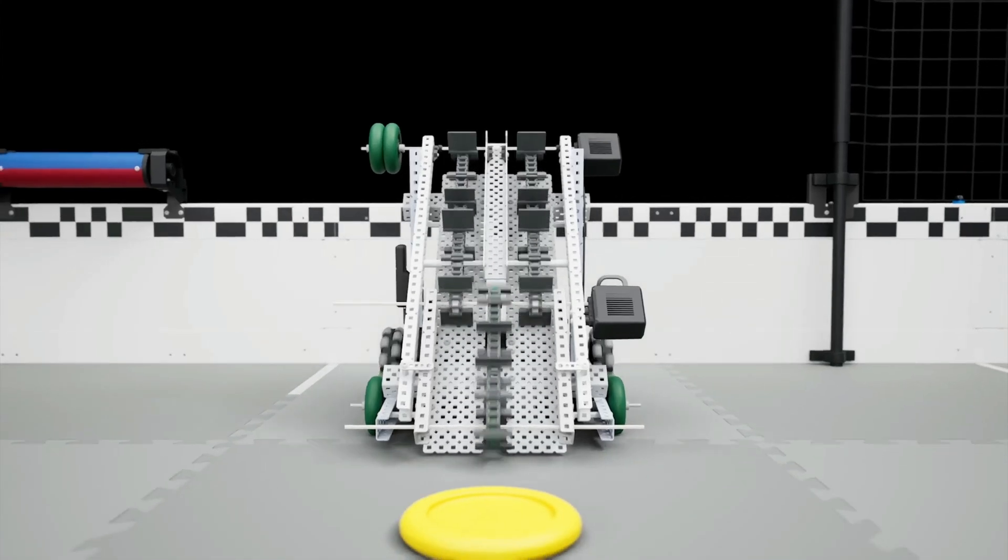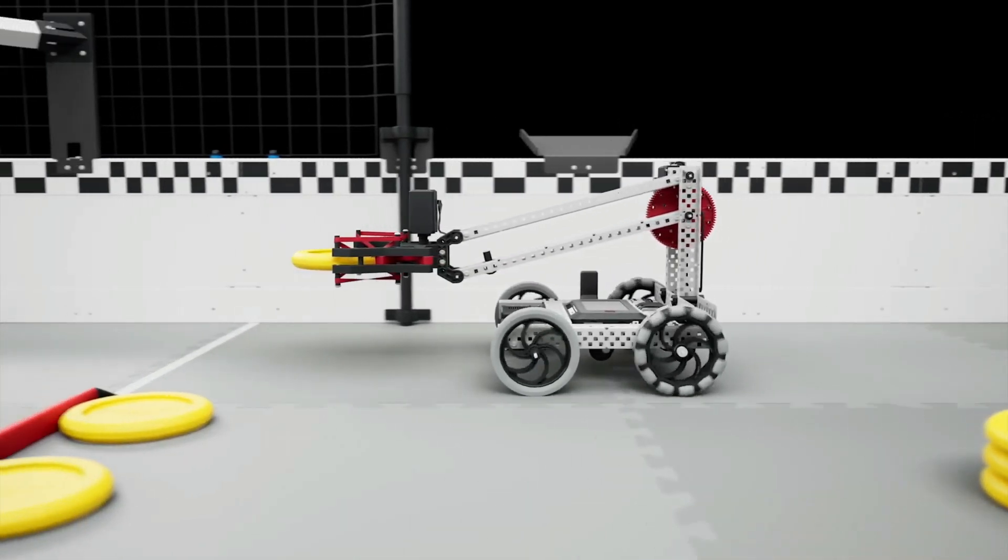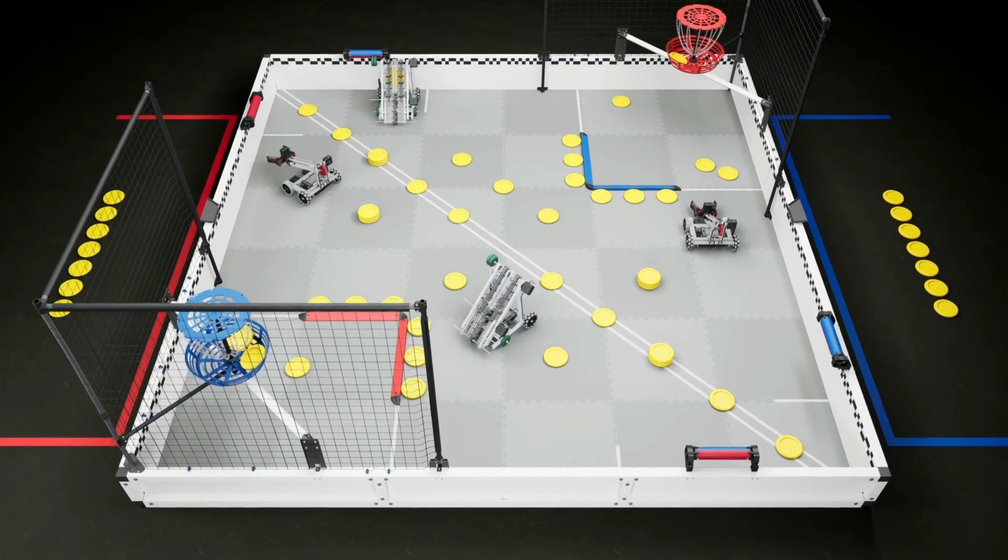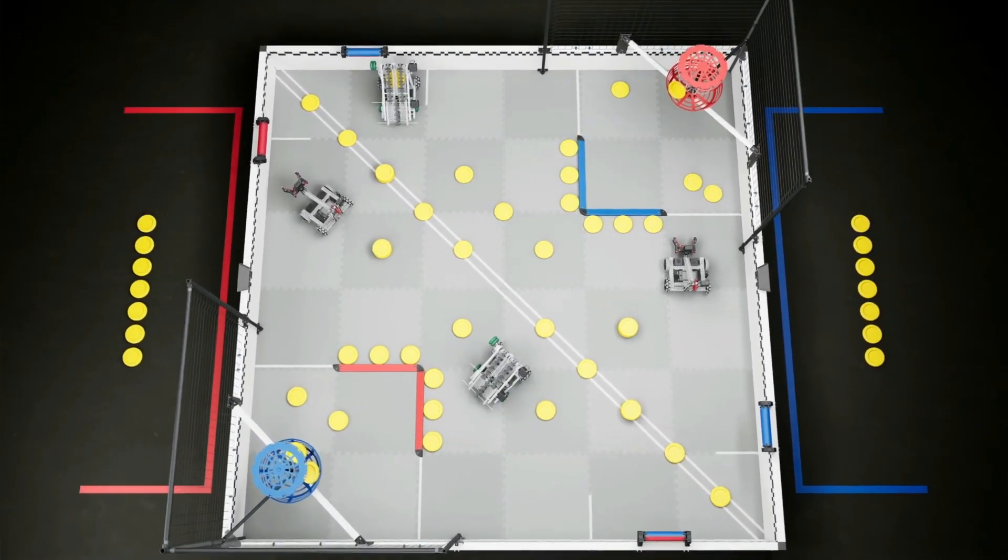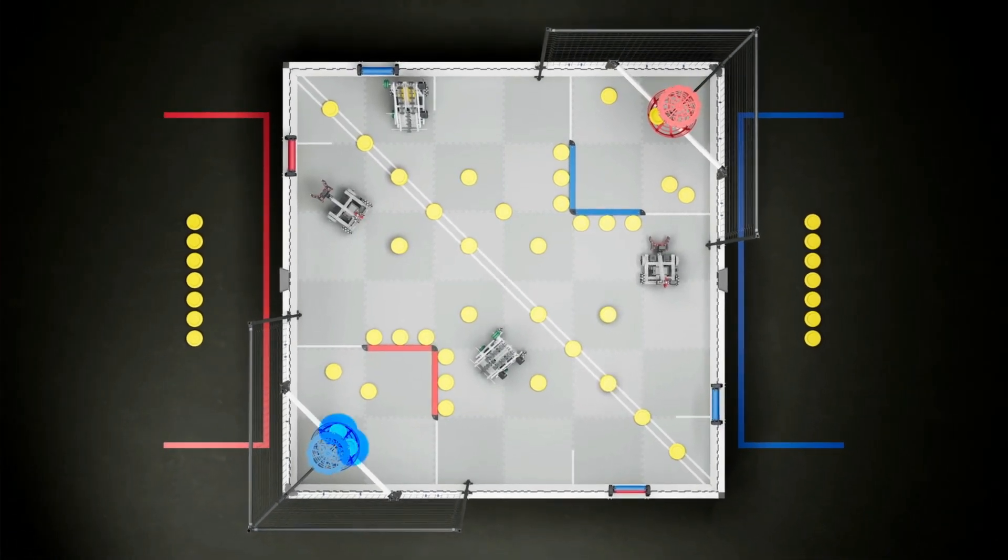Each match begins with a 15-second autonomous period, where robots operate without input from their drivers. In addition to competing for the autonomous bonus, each alliance also has the opportunity to earn an additional autonomous win point by holding both rollers on their side of the field and scoring at least two discs in their high goal.